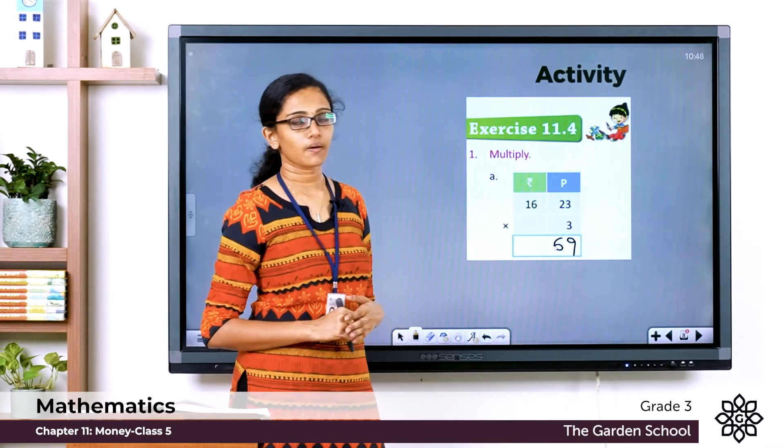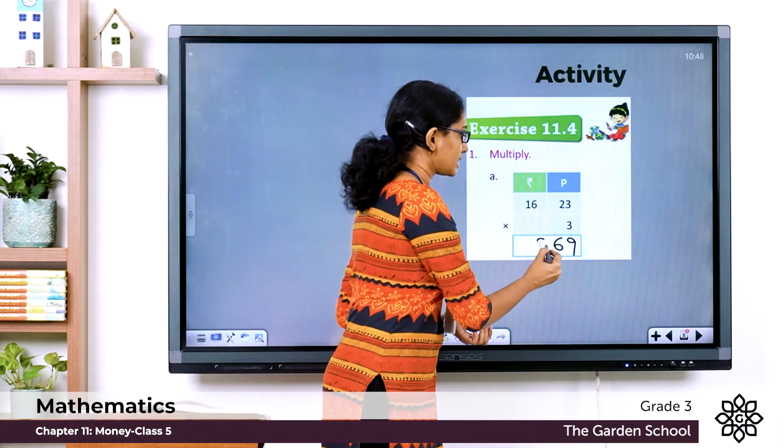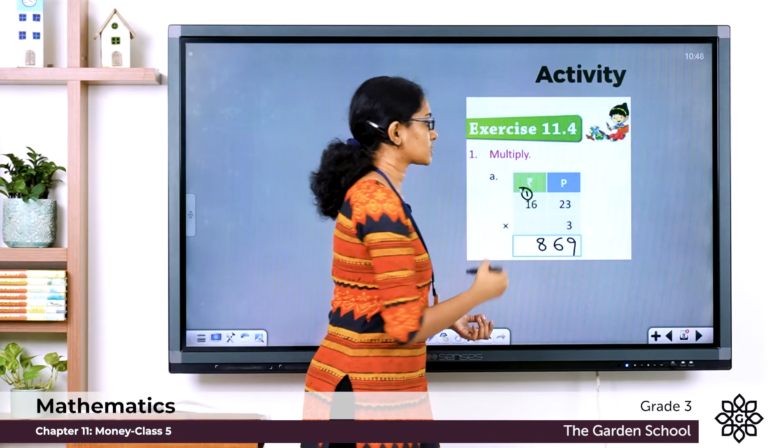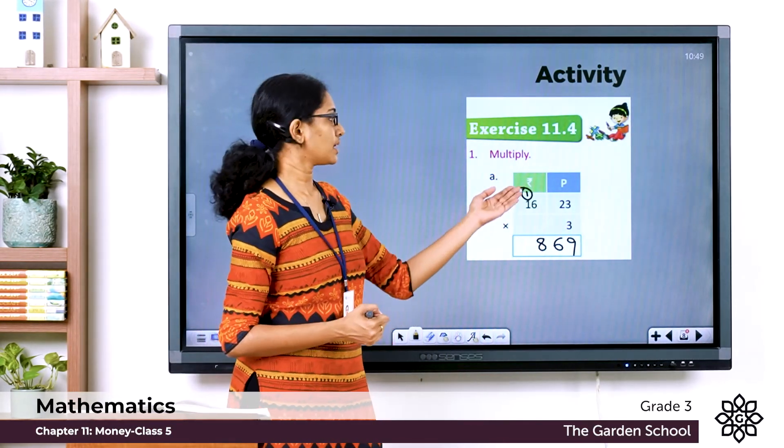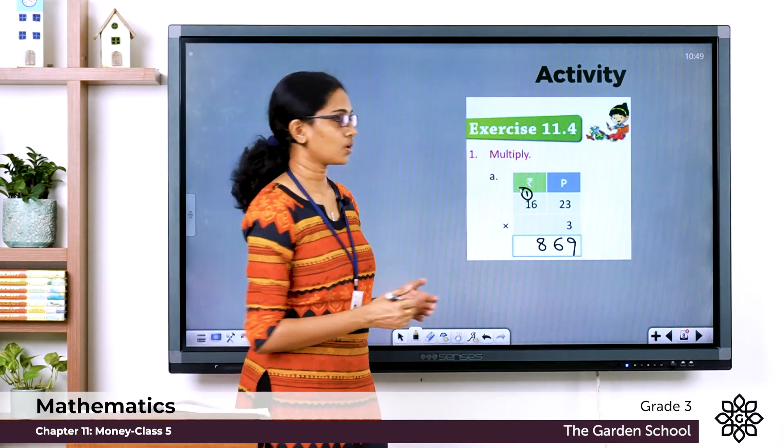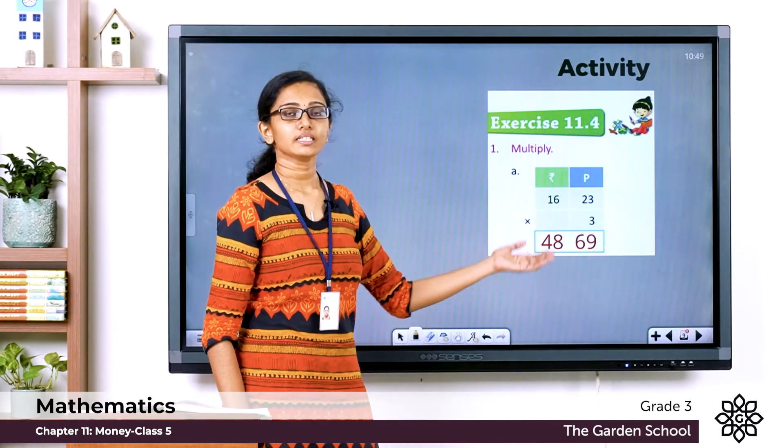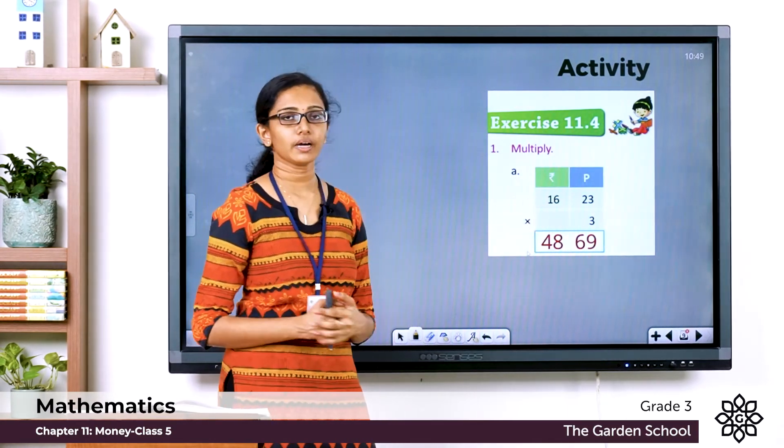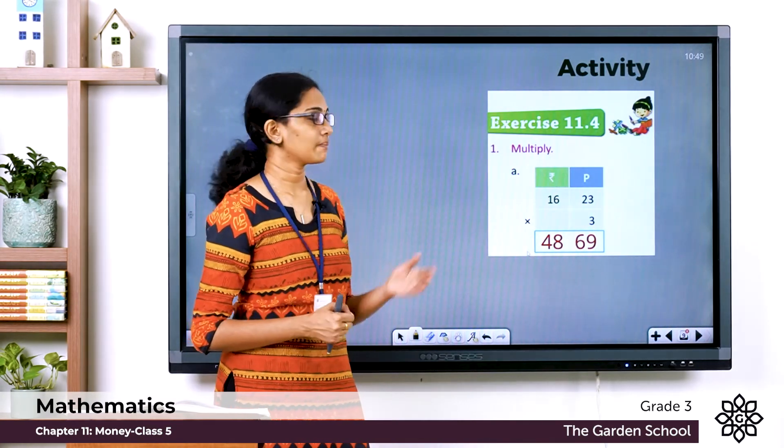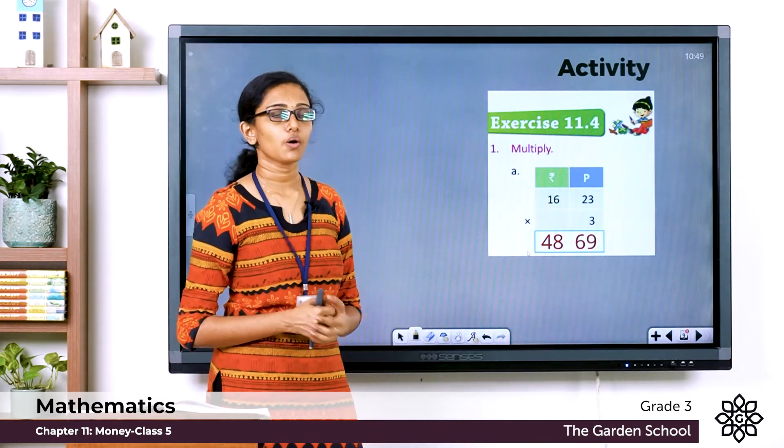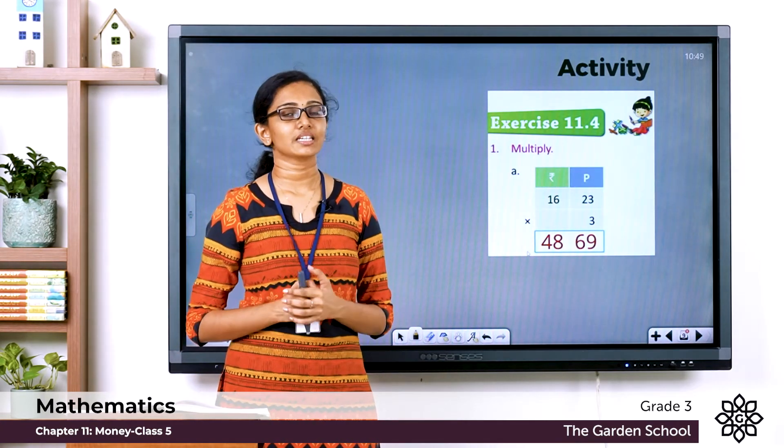Now moving to the rupee column, we have 3 into 6 which is equal to 18. So let's write 8 here, carry over 1 to the next place. Now we have 3 into 1 which is equal to 3 plus 1 is equal to 4. So in the rupee column we have 48 rupee and the paisae column we have 69 paisae. So the amount 16 rupee 23 paisae when multiplied by 3 gives you the total amount 48 rupee 69 paisae. I hope you have got this answer correctly.